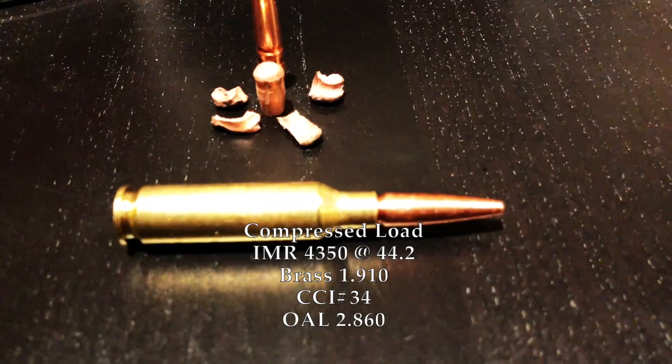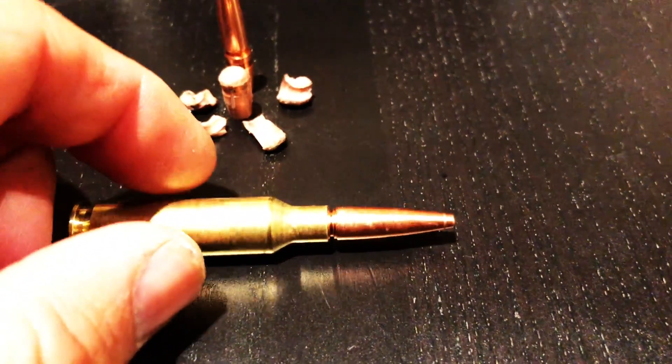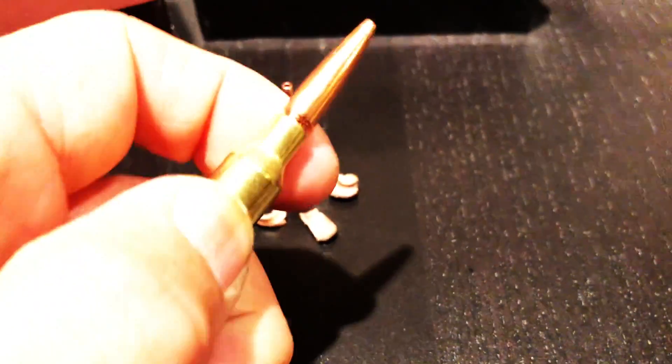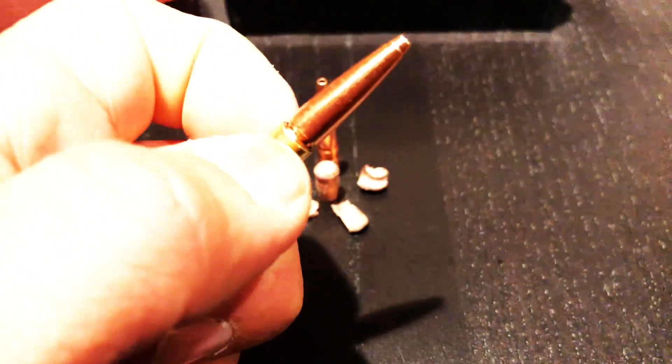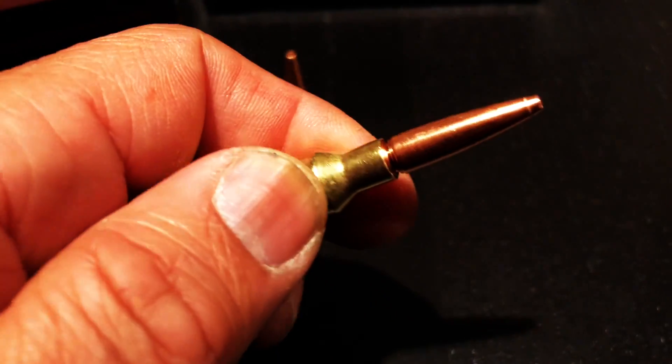This bullet measures at 2.860, which is the longest load that I have, and it's at a weak point so I should probably crimp this. But because my accuracy node right now is so good, I'm not going to mess with it.